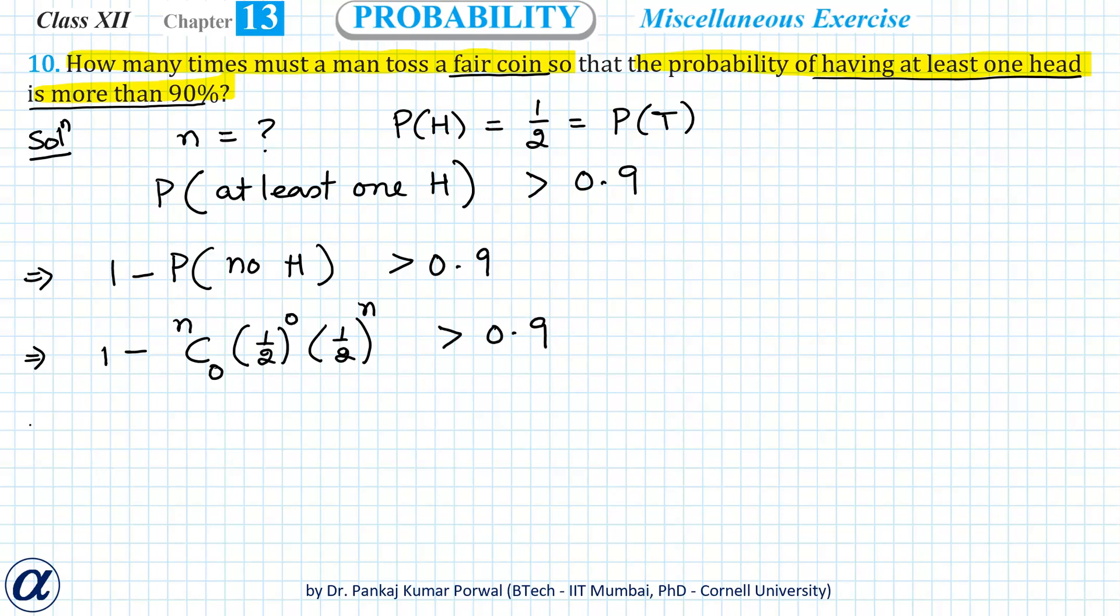This implies: 1 minus... nC0 equals 1, and (1/2)^0 also equals 1, so I am left with 1 - (1/2)^n > 0.9.